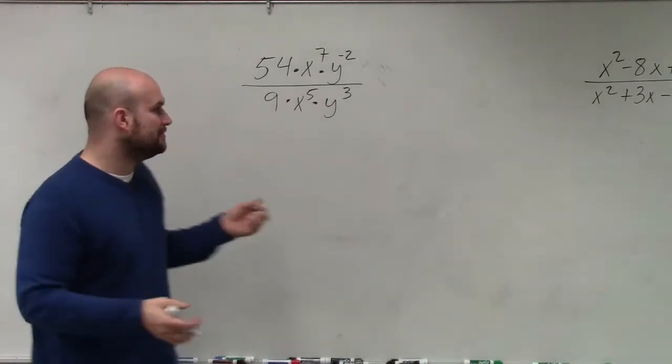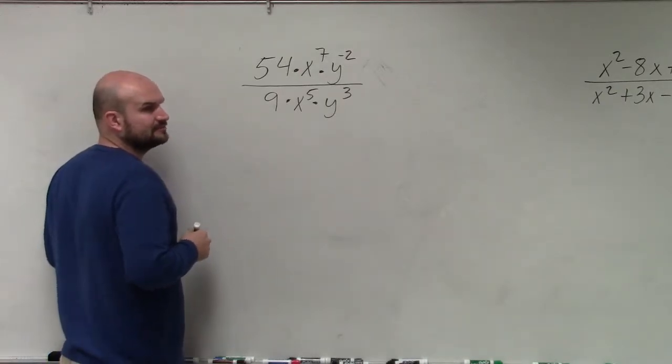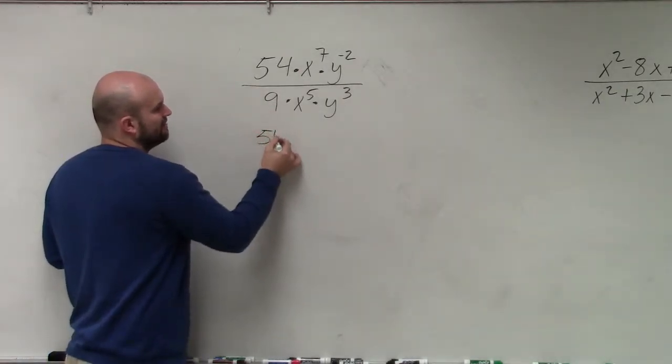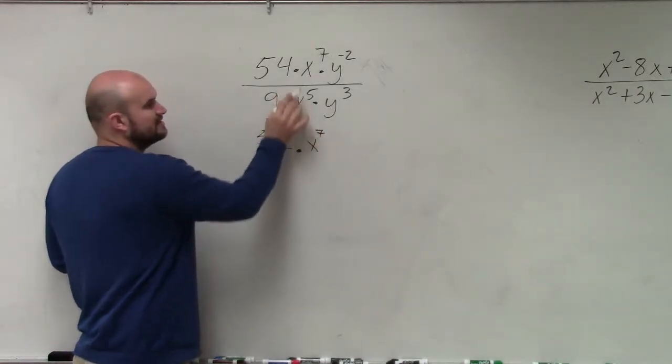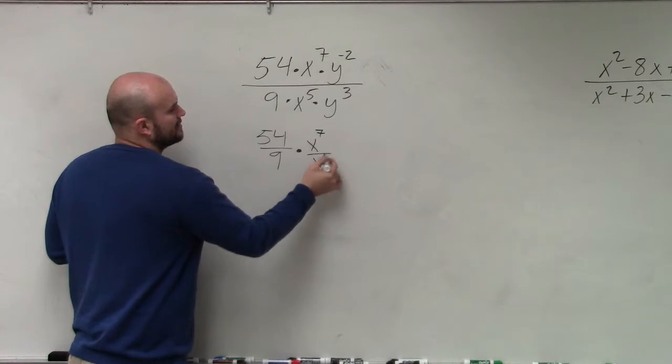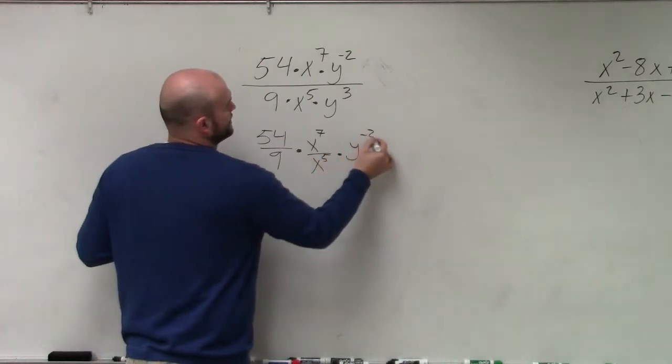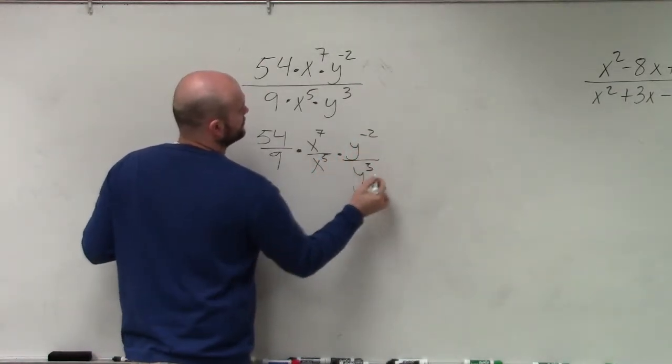Now what I like to do is just kind of break this apart with my numbers. So I could have 54 divided by 9, then I can do x to the seventh over x to the fifth, times y to the negative second divided by y cubed.